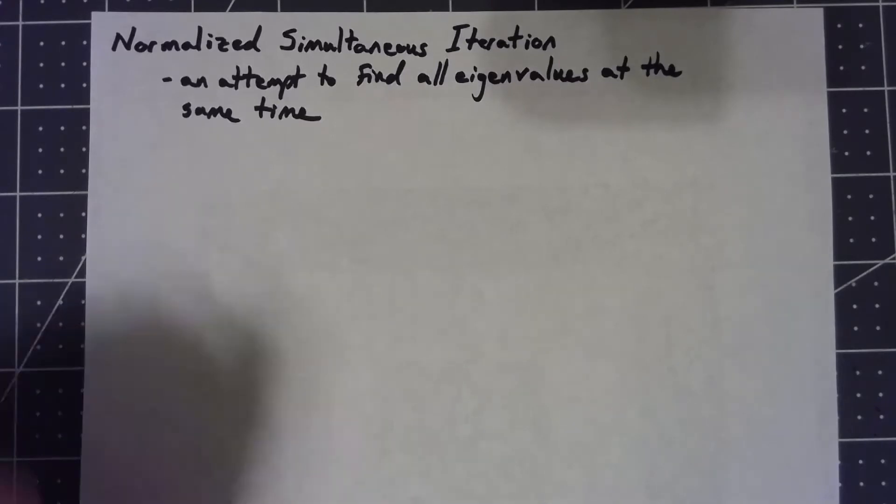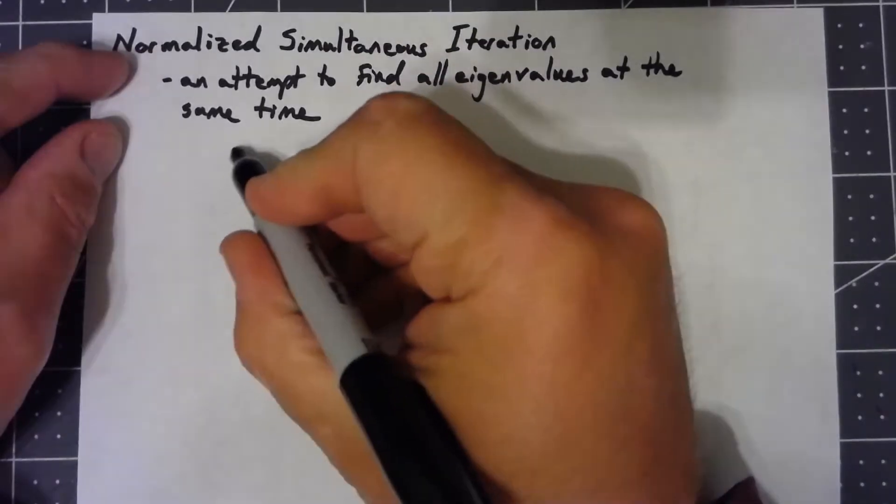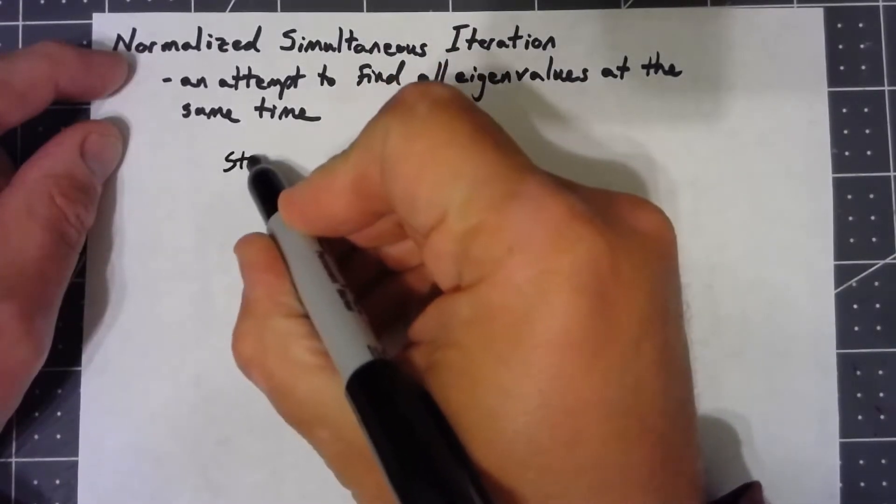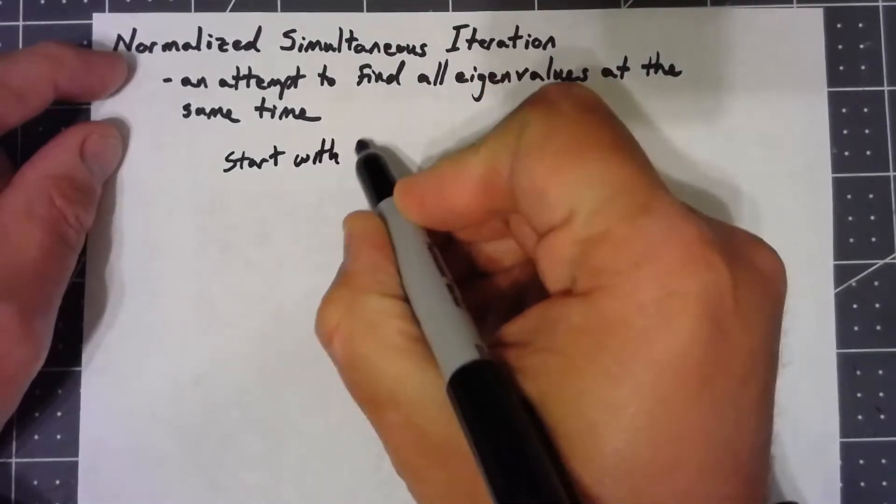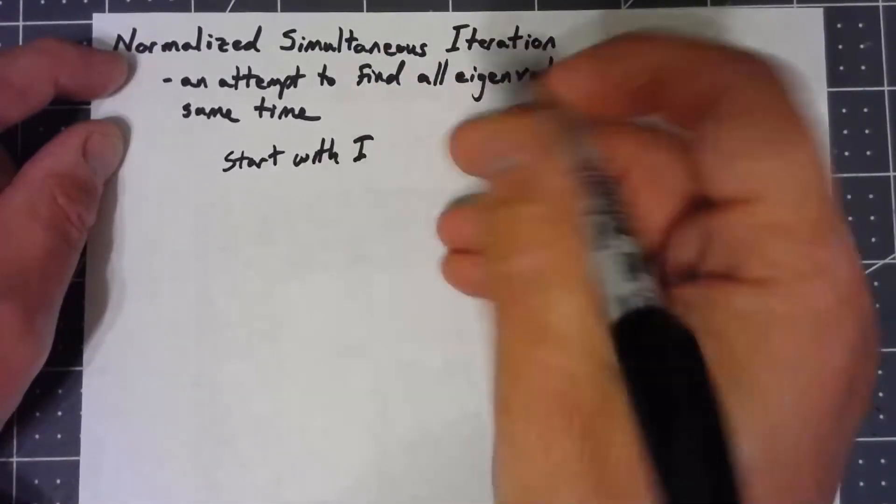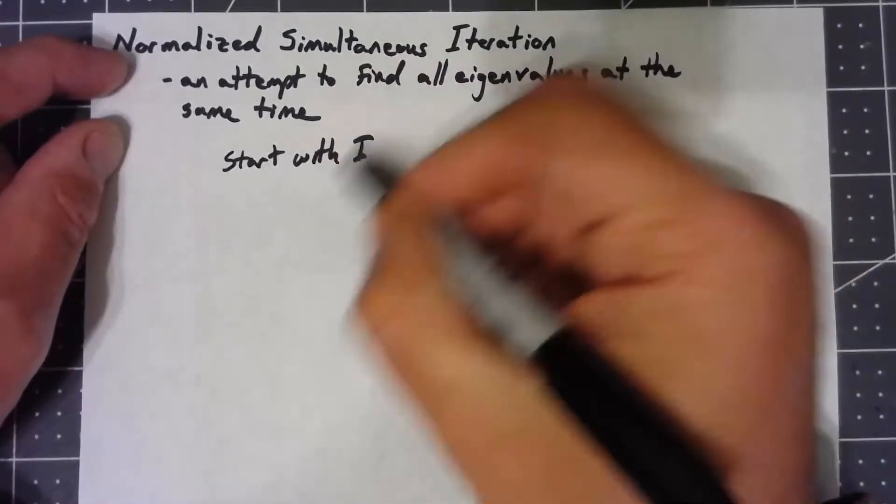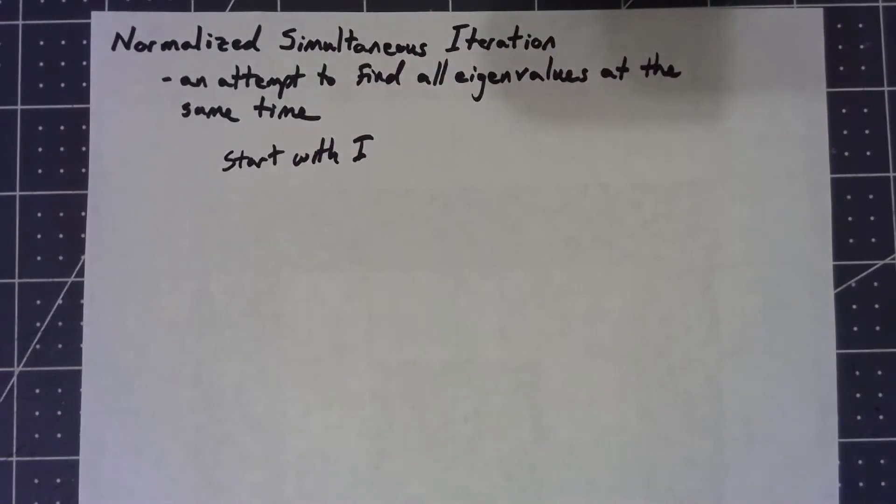I'm going to do a power iteration and start instead of with a vector, I'm going to start with the identity matrix. Then I'm going to try and do power iteration here. Now if I just go ahead and start multiplying I by powers of my matrix, start doing AI, A squared times I, et cetera, that should converge to something where all the columns are the same eigenvector.